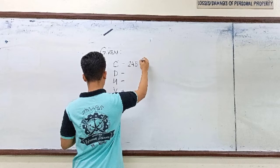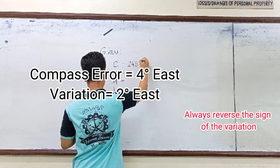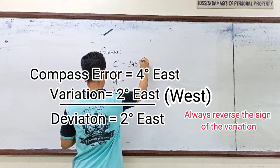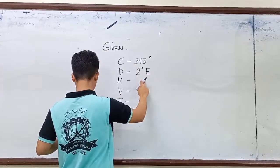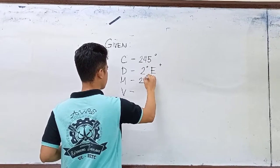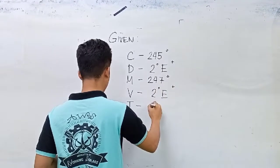In determining the deviation, we need to have the compass error and variation. The compass error is 4 degrees east and the variation is 2 degrees east. We need to remember the important rule to always reverse the sign of the variation and apply the first rule: different name subtract, same name simply add. So here we have a deviation of 2 degrees easterly. We can then use the CDMVT formula to solve for our true heading and true course.